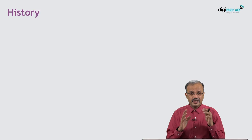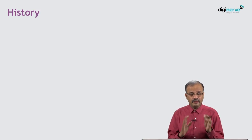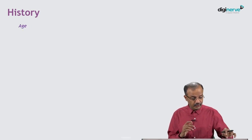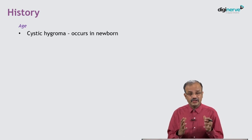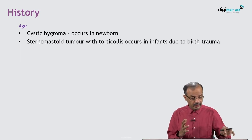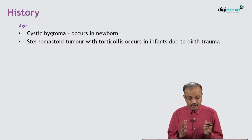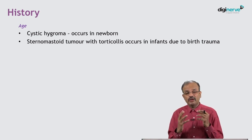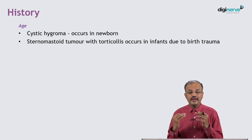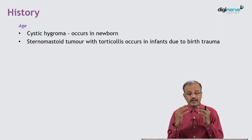History taking is very important for neck swelling. Relevant history includes age. Cystic hygroma occurs in the newborn. Sternocleidomastoid tumor with torticollis occurs in infants due to birth trauma — during delivery there may be injury to the neck causing problems in the sternocleidomastoid muscle.